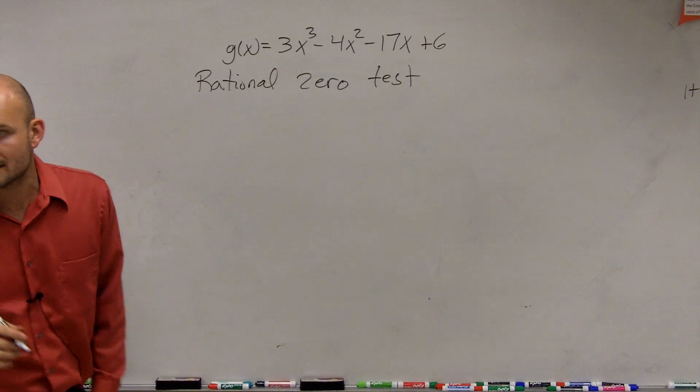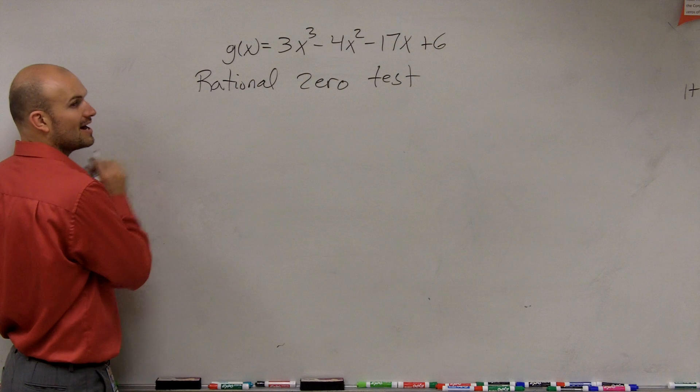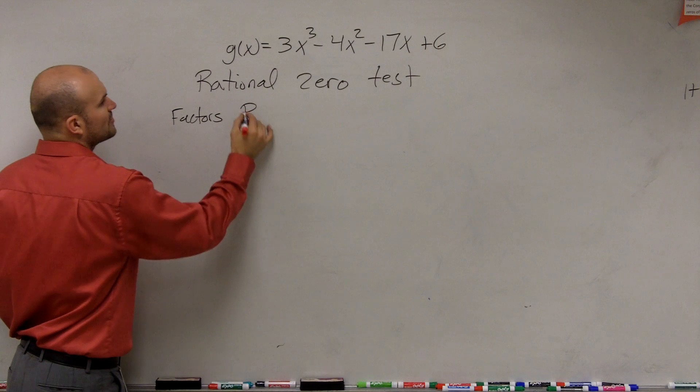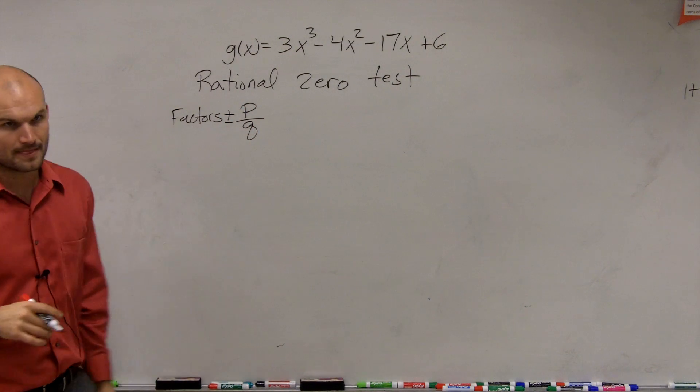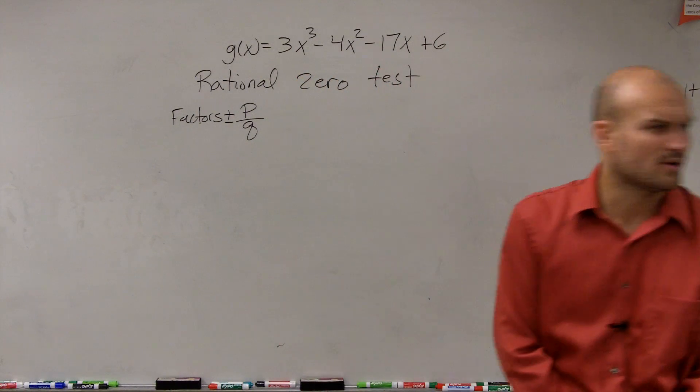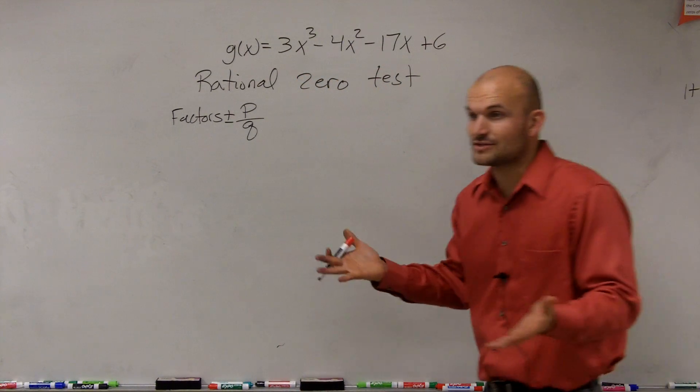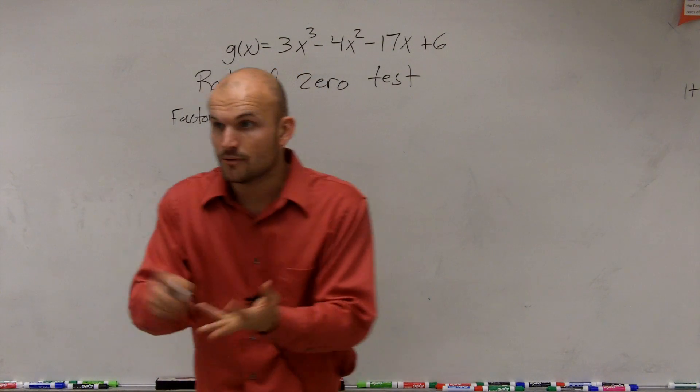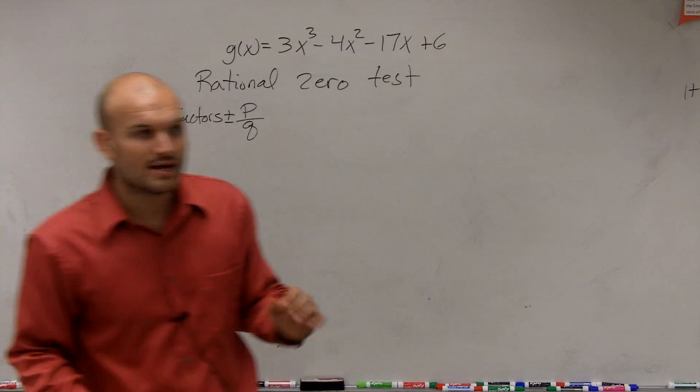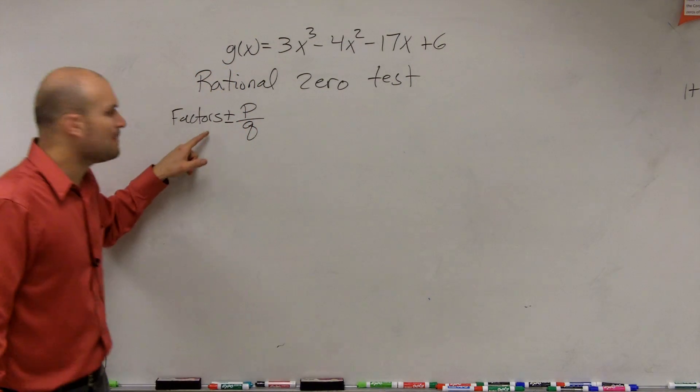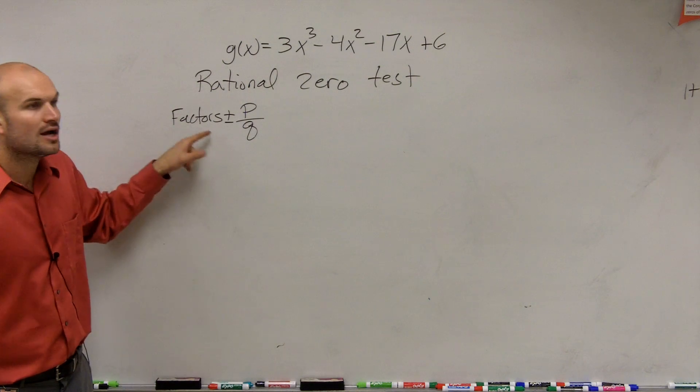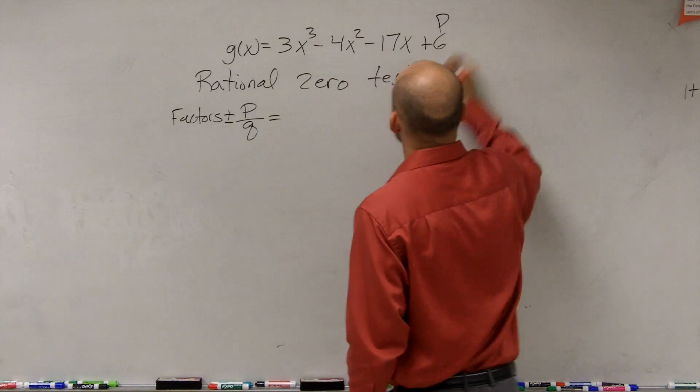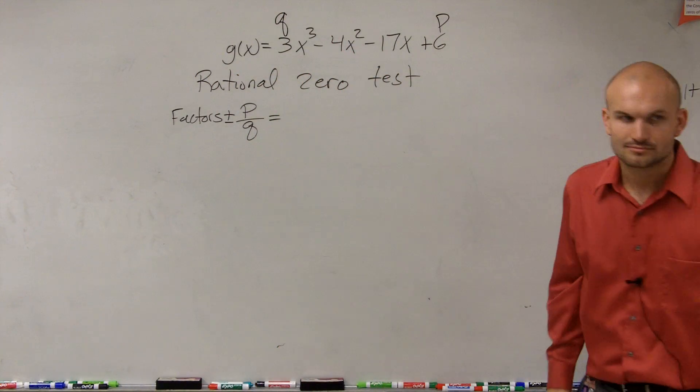And what the rational zero test tells us is all of the possible zeros, possible rational zeros, can be listed by the factors of p over q plus or minus. So you might say, what the heck is p over q? And again, remember rational zeros, right? Remember when we were finding the zeros of a polynomial, we had rational, we had irrational, we had imaginary, right? We had all these different types of zeros. So if I just want to find what are the rational zeros, all of the possible rational zeros can be in the form of their factors of p over q. So what is your p and what's your q? Well, p is the constant term and q is the leading coefficient.